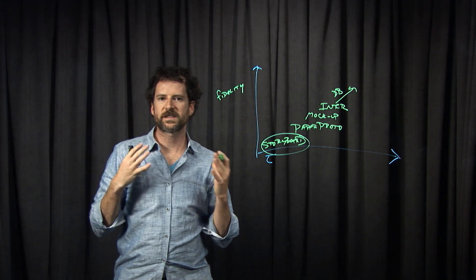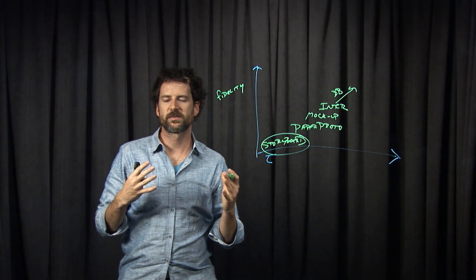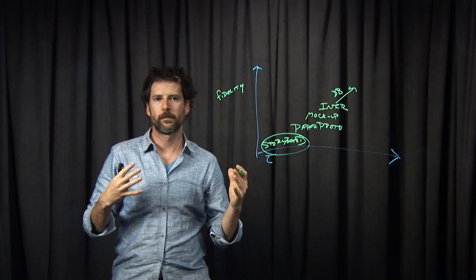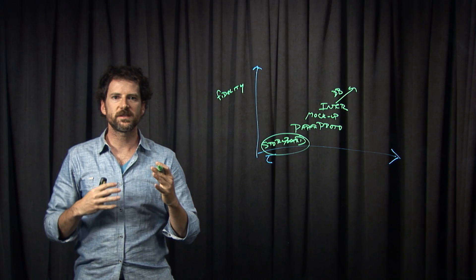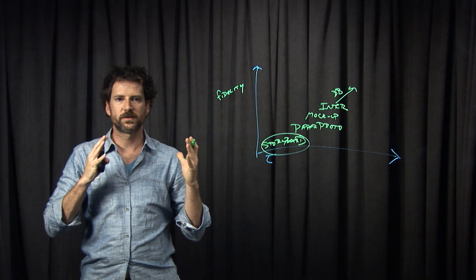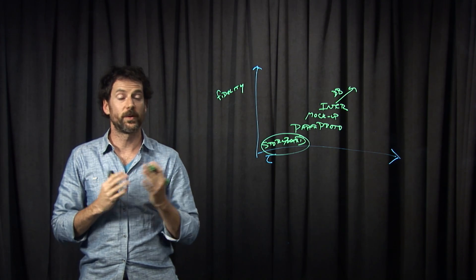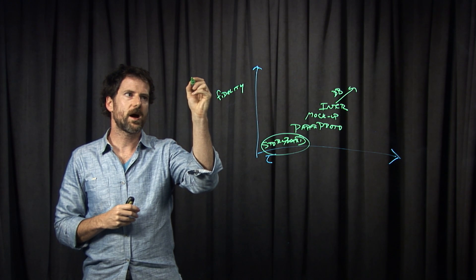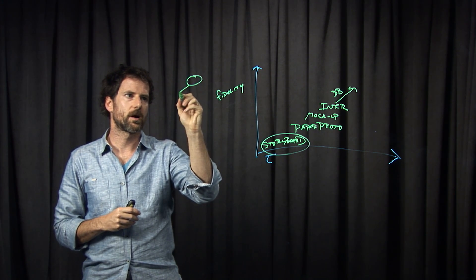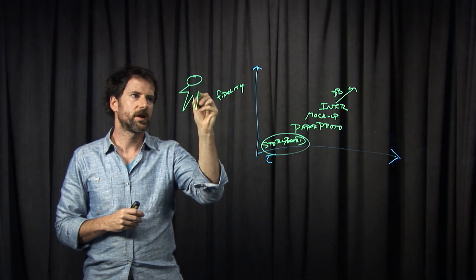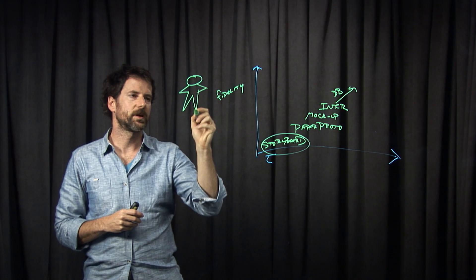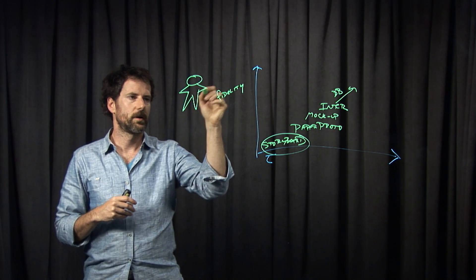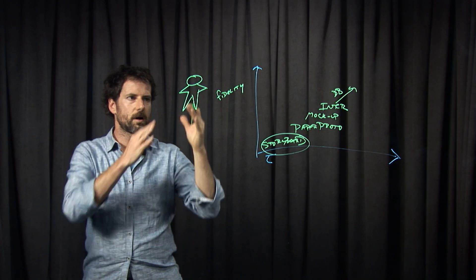I'd like to give you one tip for creating your storyboards that'll make it a lot easier to put people in them. This is a strategy I learned from Bill Verplank. If you want to be able to draw a person, we can create star people — super simple. A circle for a head, and then boom, boom, boom, boom — you've got the star and there's a person.